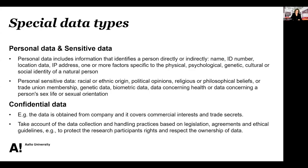In a small nutshell, these are the special data types to be especially mindful of if you're working with them. One is personal data — information that identifies a person directly or indirectly. It might be their name, an ID number, location data, IP address, or one or more factors specific to their physical, psychological, genetic, cultural, and social identity. Keep in mind that a single factor might not identify an individual, but if you have several of these, it doesn't take very many when put together to triangulate who that person is.